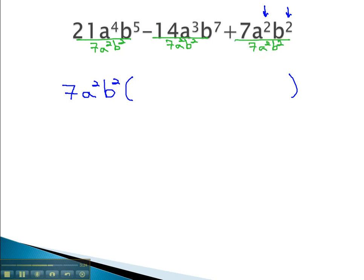As we do and reduce those fractions, 21 over 7 gives us 3, a squared, b cubed.